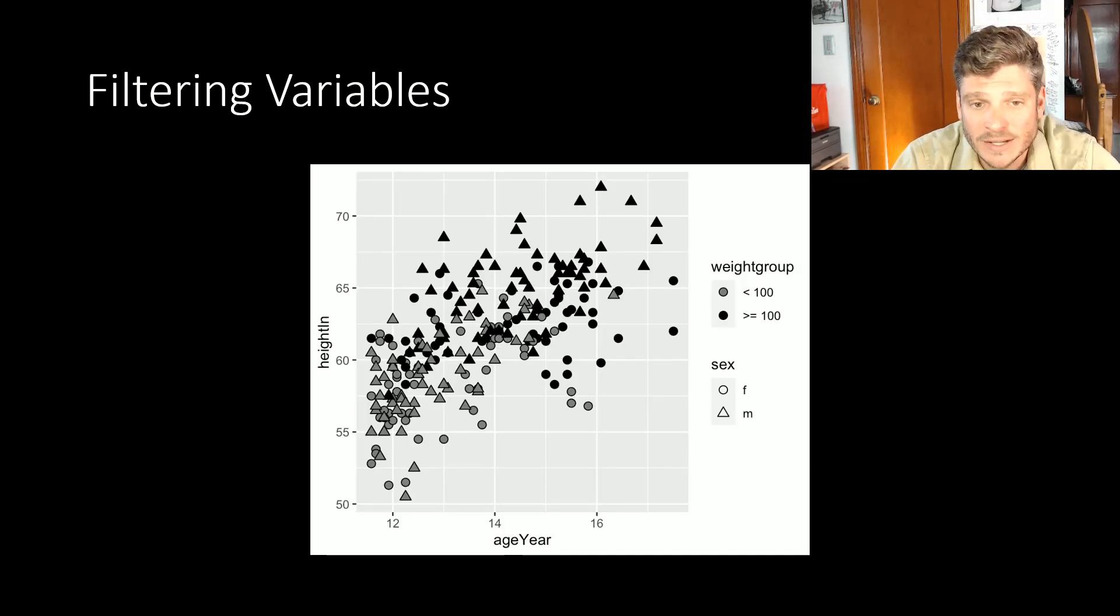We can see that the weight group—if they are under 100 pounds it has a gray fill, if they are 100 pounds or over it's completely filled in. The sex is determined by the different shapes, circles for females and triangles for males. R knew that since we are using a fill as one of my filters, we have to pick shapes that are able to be filled in. Now we have four different types of shapes on the graph.